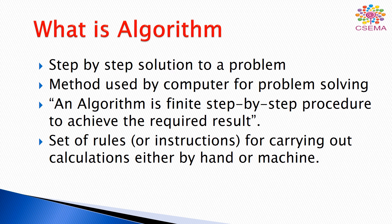What is an algorithm? An algorithm is basically a step-by-step solution to a problem. In computer systems or in general life we face a lot of problems, and we define some systematic approach to solve these problems. This systematic approach is known as an algorithm. In computer terminology, it is a finite step-by-step procedure used to achieve any required results. It can also be said as a set of rules or instructions for carrying out any calculations, either by hand or by using machines, that is, a computer.